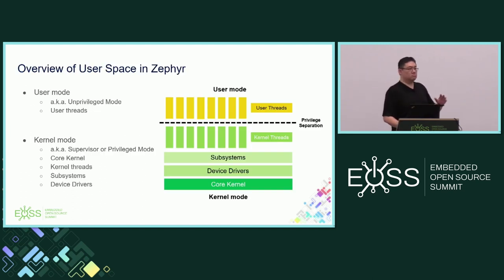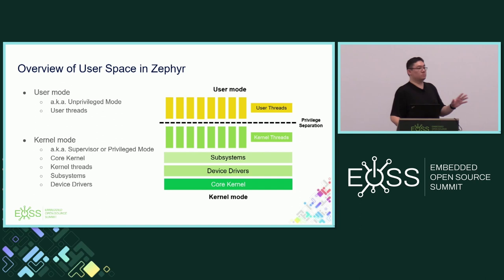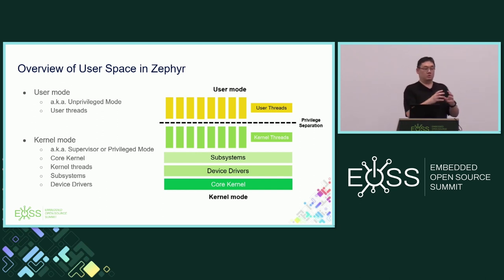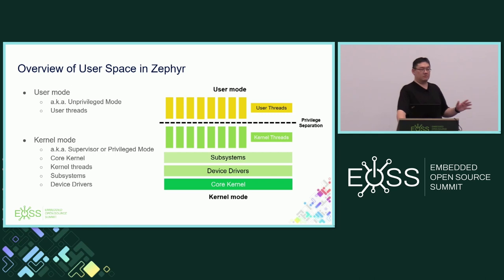For user space, the idea is kind of simple. You have kernel mode and user mode, where in kernel mode you have elevated privileges — basically access to everything, like all the hardware devices. In user mode, you have limited access, a very limited set of capabilities to make sure they cannot do bad things. Kernel mode is sometimes also referred to as supervisor or privileged mode, and user mode is an unprivileged mode.